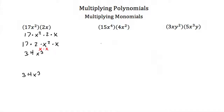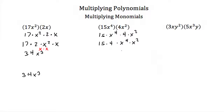Let's try this again. Here we have 15x to the fourth times 4x squared. That's the same as 15 times x to the fourth times 4 times x squared. And I can rewrite that as 15 times 4 times x to the fourth times x squared.